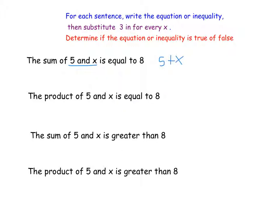So the sum of five and x is equal to, so that's my equal sign, eight. So now I'm going to substitute this three in. So five plus three equals eight. Five plus three is eight. They mean the same thing. So this is true.